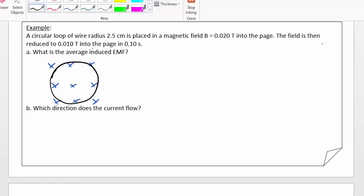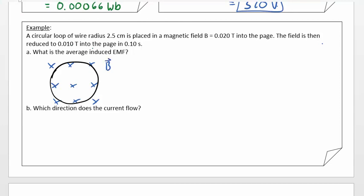And I've got my loop that's sitting in there, kind of like that. Now, the field starts off with a strength of 0.020 Teslas. But then it's reduced. So I'm going to draw kind of just a weaker field, maybe like this, with the same loop sitting in it.